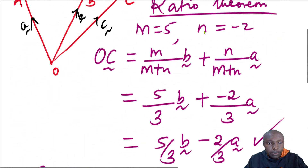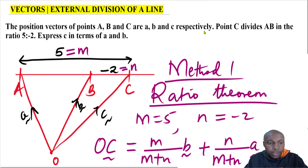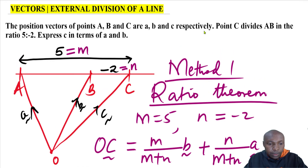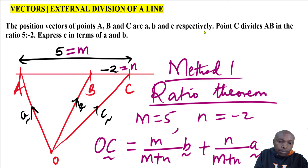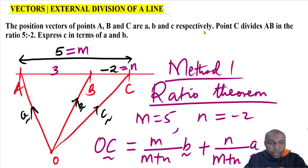Since AB is the segment being divided externally by point C, the distance AB will be 3. From A to C is 5 and B to C is negative 2, so to get AB you take 5 subtract 2 and get 3. Therefore AB is 3.